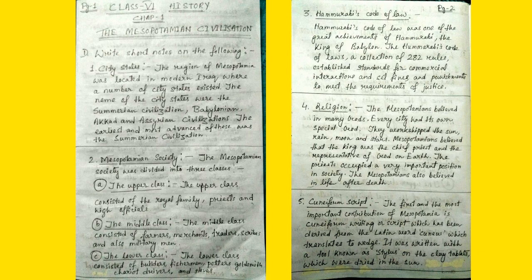Number 4: Religion. The Mesopotamians believed in many gods. Every city had its own special god. They worshipped the sun, rain, moon and stars. Mesopotamians believed that the king was the chief priest and the representative of god on earth. The priests occupied a very important position in society. The Mesopotamians also believed in life after death.